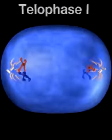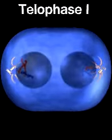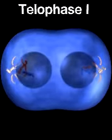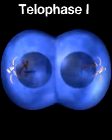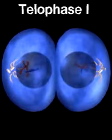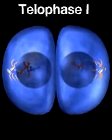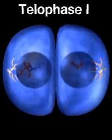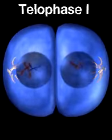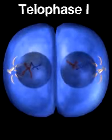During telophase I, the spindle is broken down, the chromosomes uncoil, and the cytoplasm divides to yield two new cells, each with half the number of chromosomes. The second division of meiosis now proceeds.